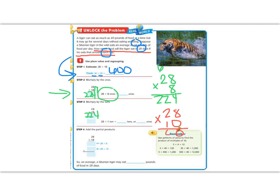So we would get 8 times 0 is 0, 2 times 0 is 0. Here's our magic zero. 1 times 8 is 8, and 1 times 2 is 2. So we get 280, so we have 280.